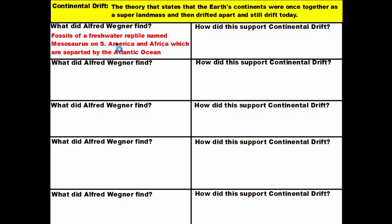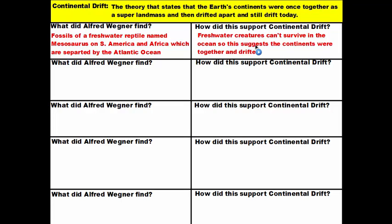Alfred Wegener found this freshwater reptile Mesosaurus in South America and Africa, which are separated by the Atlantic Ocean. This supported continental drift because freshwater creatures can't survive in the ocean, suggesting that the continents were together and then drifted apart.